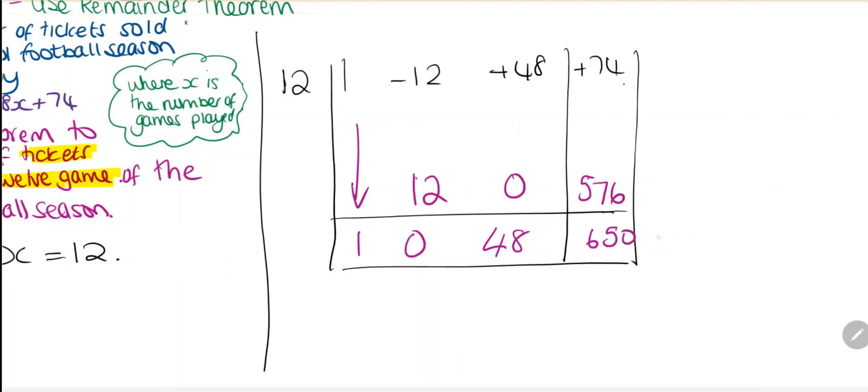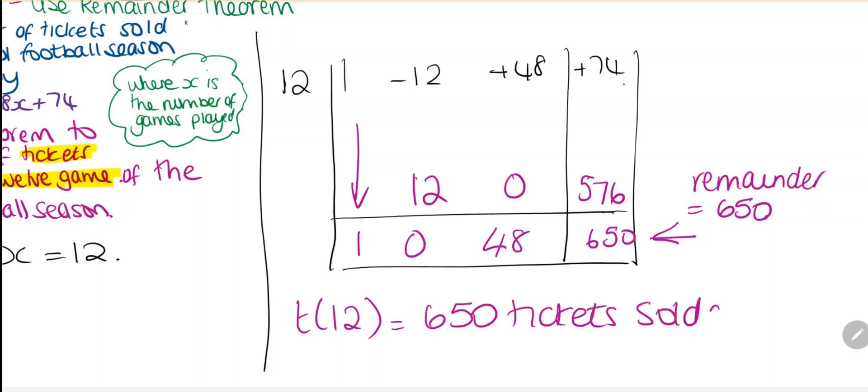So this is the remainder, which is equal to 650. This is 650 tickets that were sold during the 12th game of the season.